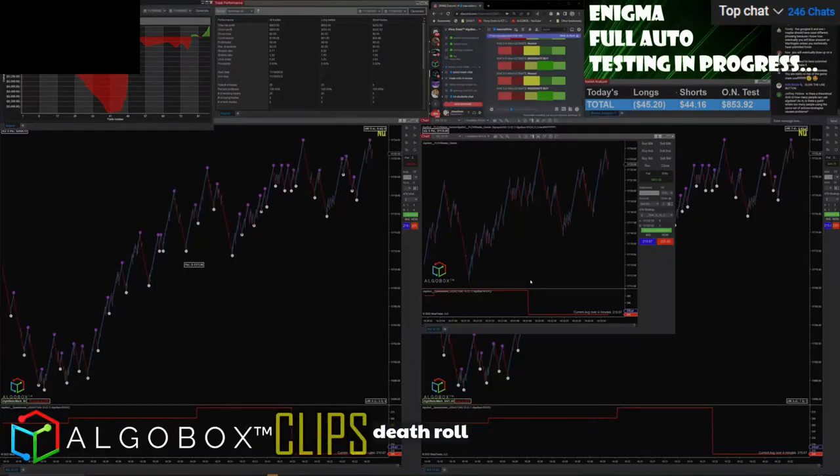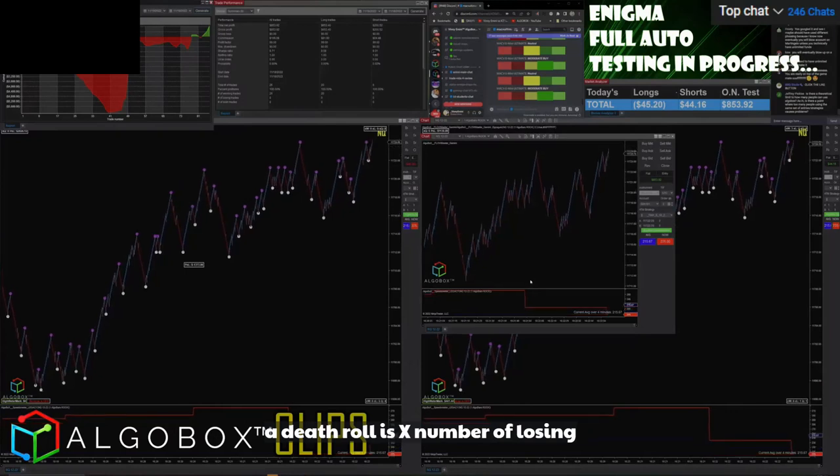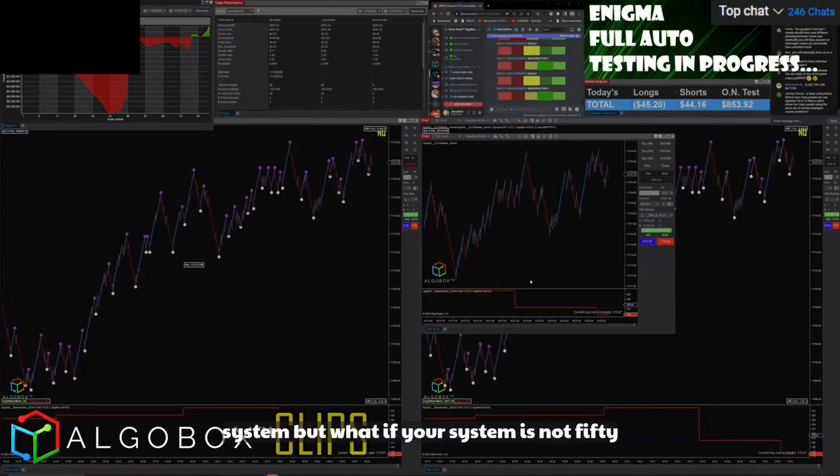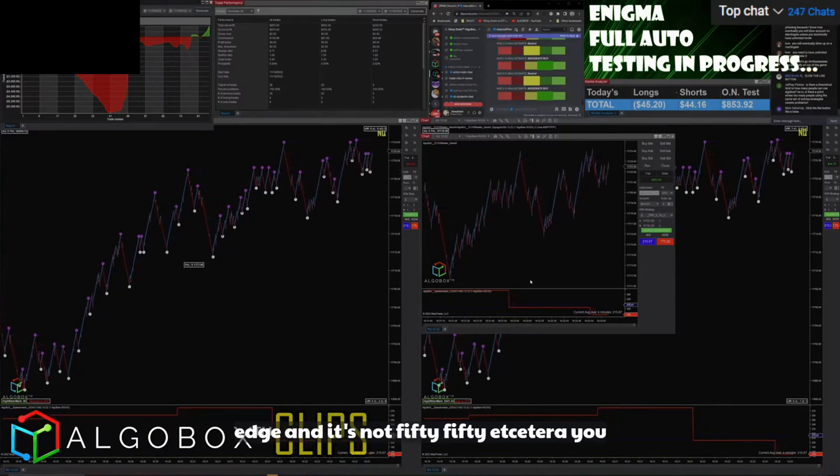What's the death roll? Okay, we call it the death roll. A death roll is X number of losing trades in a row, in a 50-50 system. But what if your system is not 50-50? What if you build in an inherent edge and it's not 50-50?